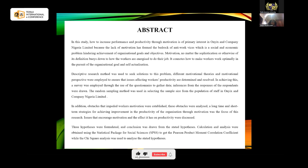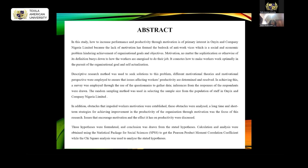A survey was employed and questionnaires were used to gather data. Inferences from the responses were drawn from what was received from the respondents. A random sampling method was used in selecting the sample size from the population of staff in OE's and Company Nigeria Limited. The obstacles affecting motivation were established, analyzed, and long-term and short-term strategies for achieving them were preferred. Three hypotheses were formulated and conclusions were drawn from these stated hypotheses.